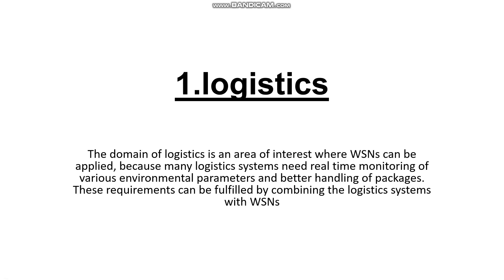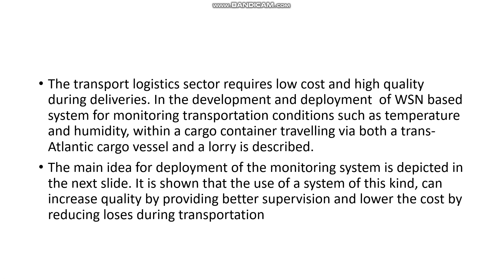The first is logistics. Logistics is a very keen area of interest in WSN, where it needs real-time monitoring of various environmental parameters such as temperature, atmospheric pressure, etc. This helps out the logistics system along with wireless sensor networks, enabling low cost and high quality deliveries. This is explained through the deployment of a WSN system for monitoring transportation parameters such as temperature, humidity, and pressure for cargo containers.